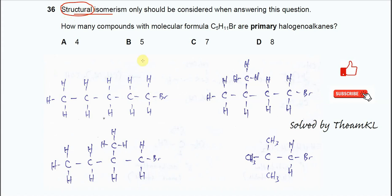Now second thing they require is primary haloalkane. So it's asking how many compounds with molecular formula C5H11Br are primary haloalkanes. So now we need to consider primary haloalkanes only.